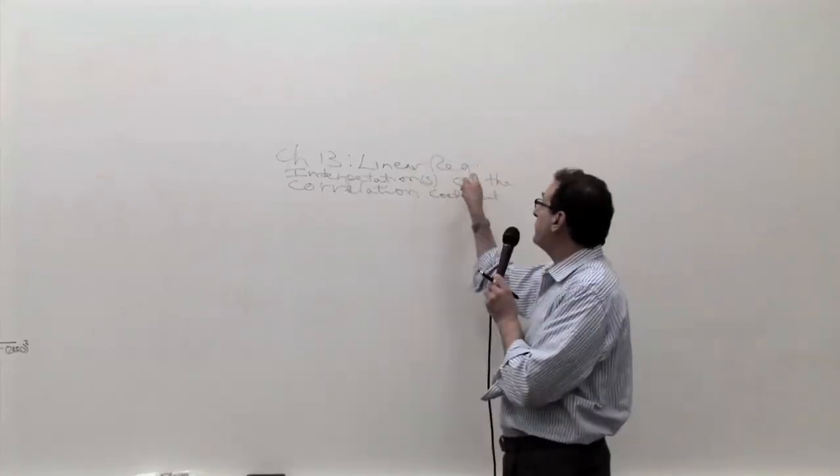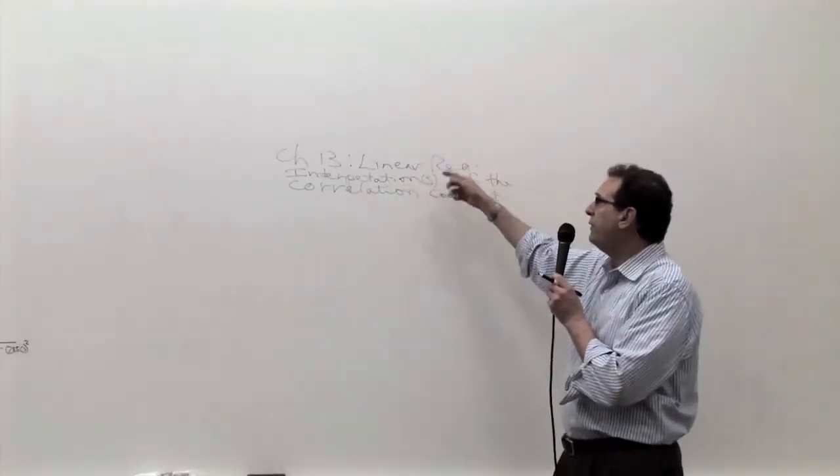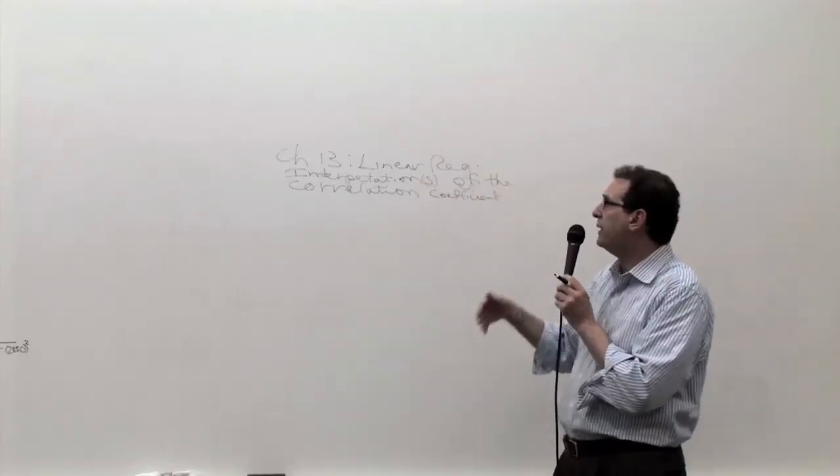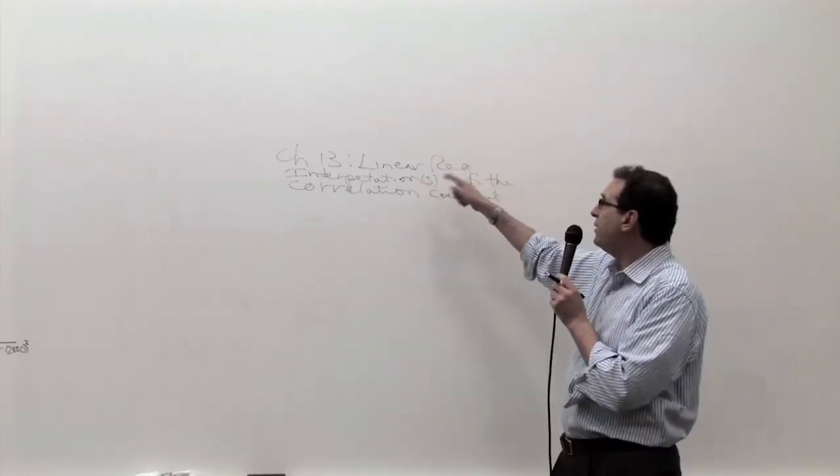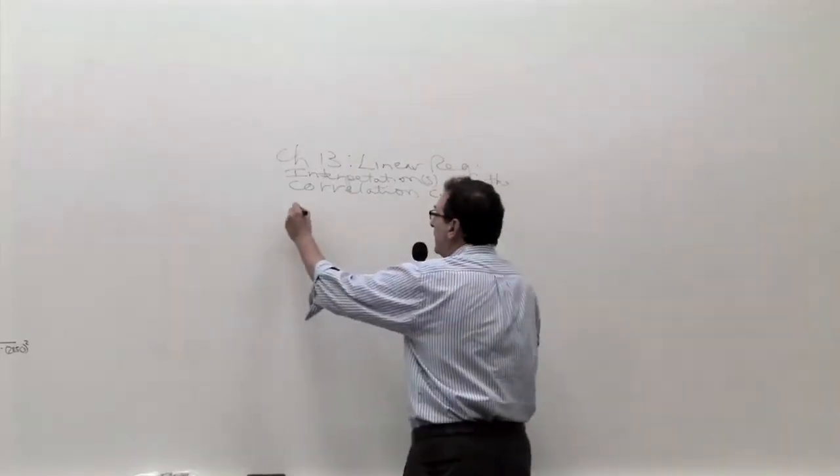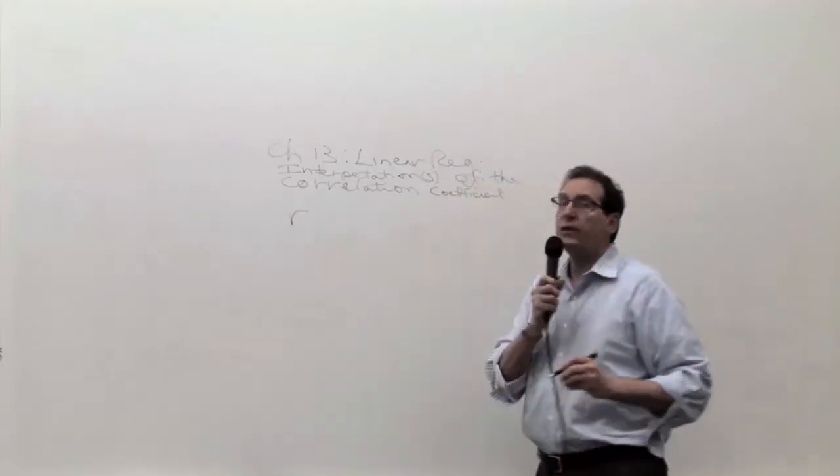We're continuing Chapter 13, Linear Regression. So far there were three or even four videos involving the correlation coefficient, the theory behind it. But now we're going to continue the discussion of the interpretation of the correlation coefficient, and of course the symbol for the correlation coefficient is R.